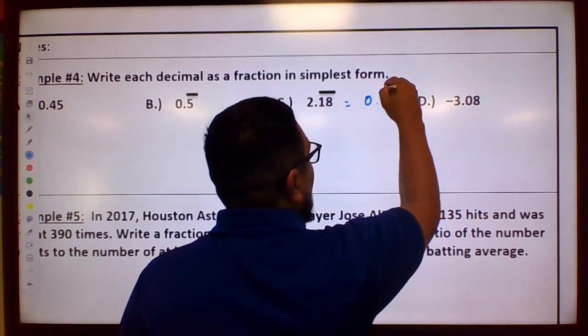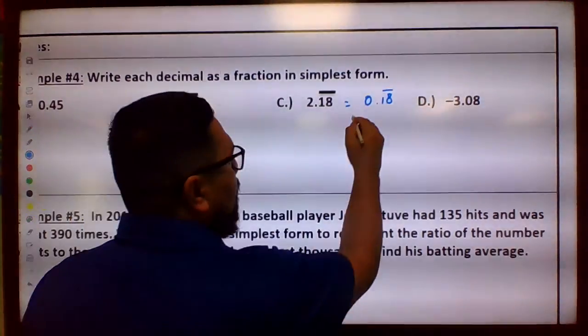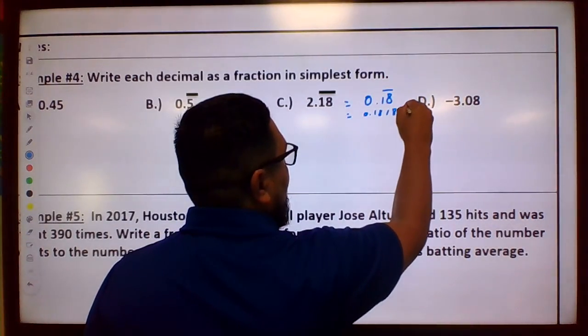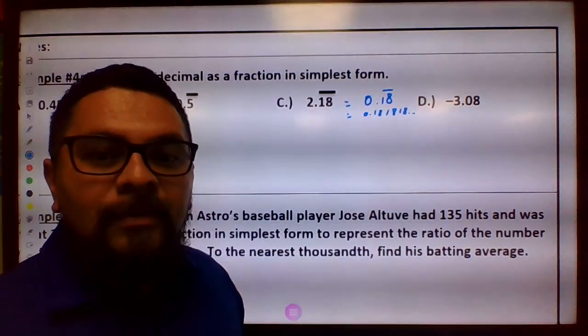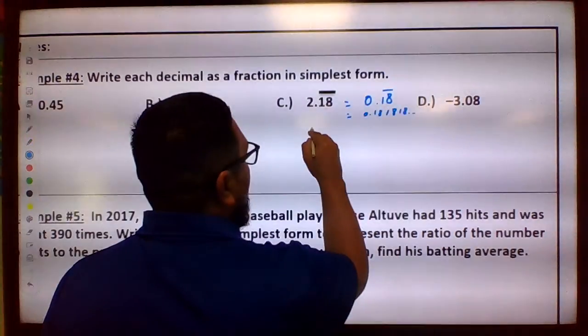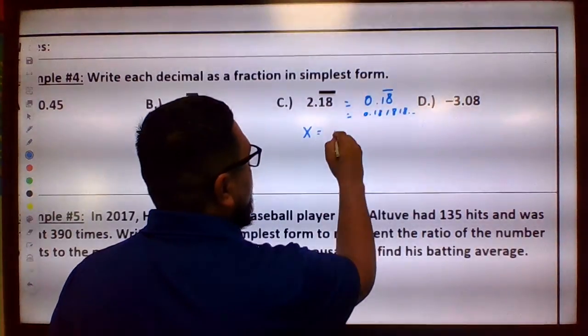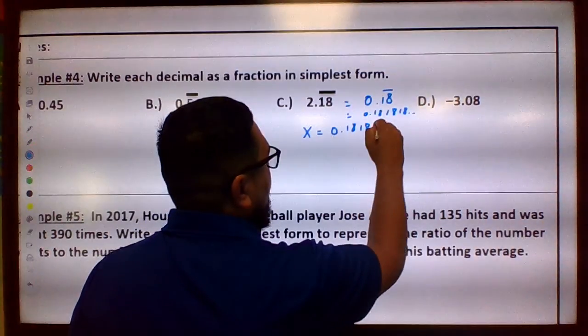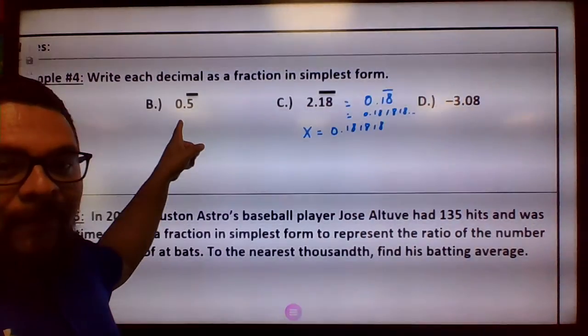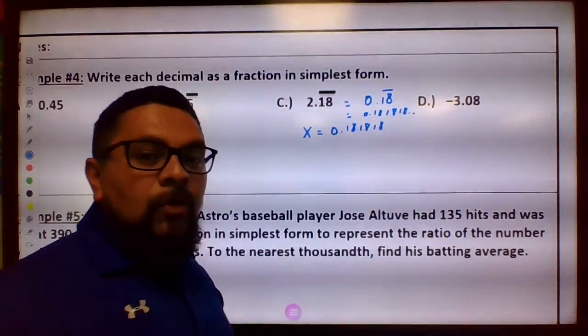Remember this means 0.181818, it keeps going. Now we're going to write our equation, so we're going to choose the letter X again equals 0.181818. Remember on this one X equals 0.5555, remember that one?